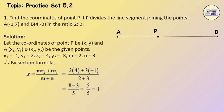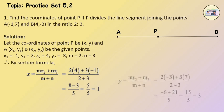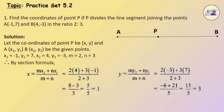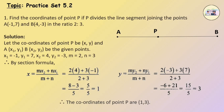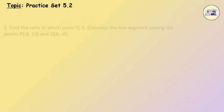x = (2 × 4 + 3 × (−1)) / (2 + 3) = (8 − 3) / 5 = 5/5 = 1. Therefore, y = (my2 + ny1) / (m + n) = (2 × (−3) + 3 × 7) / (2 + 3) = (−6 + 21) / 5 = 15/5 = 3. Therefore, the coordinates of point P are (1, 3).